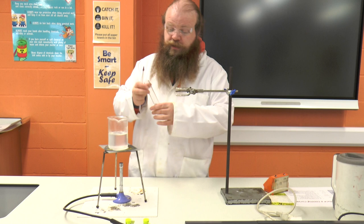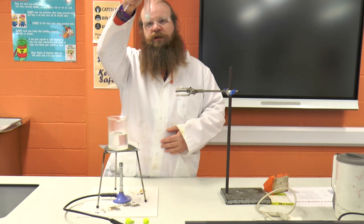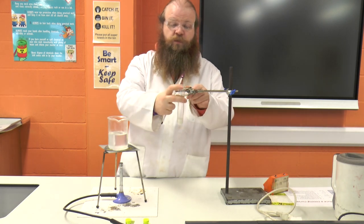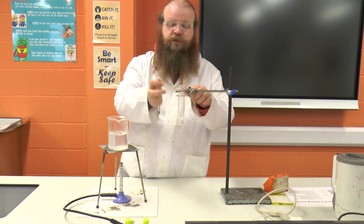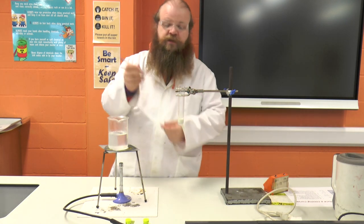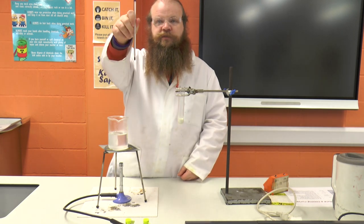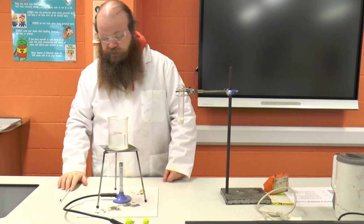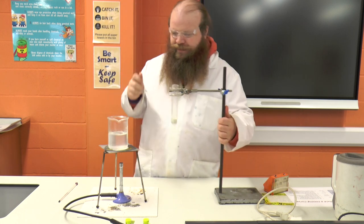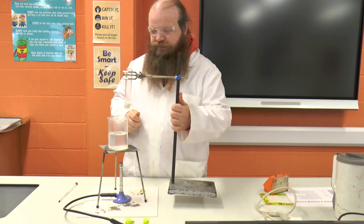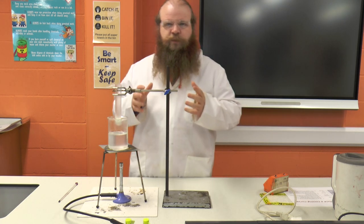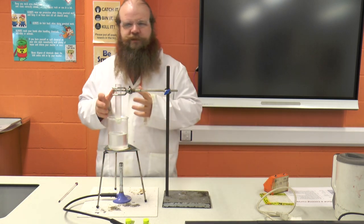We're then going to take a boiling tube which has got about three or four centimetres depth of stearic acid in it, which is more than enough to cover the entire bulb of a standard liquid-in-glass thermometer. It's important that we make sure we have sufficient stearic acid to cover the bulb of the thermometer, otherwise we won't get accurate results.